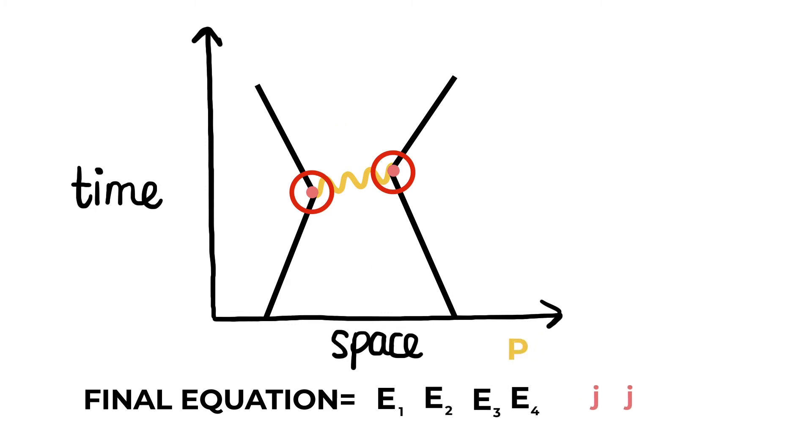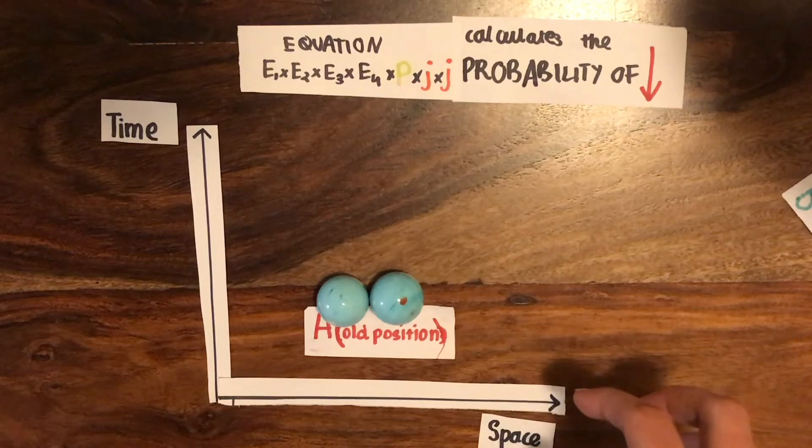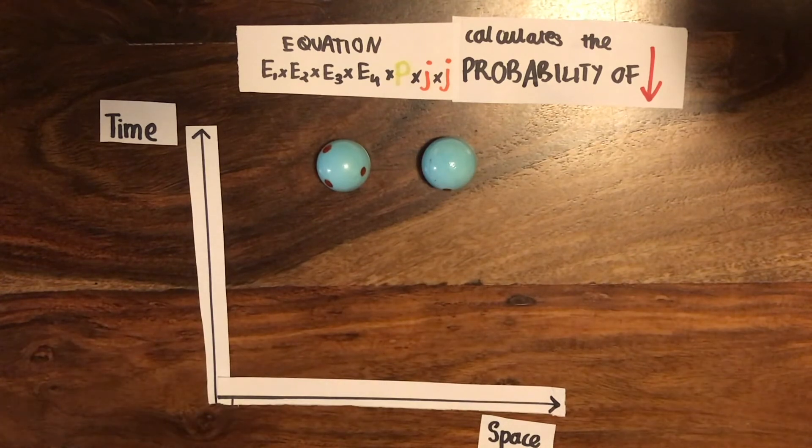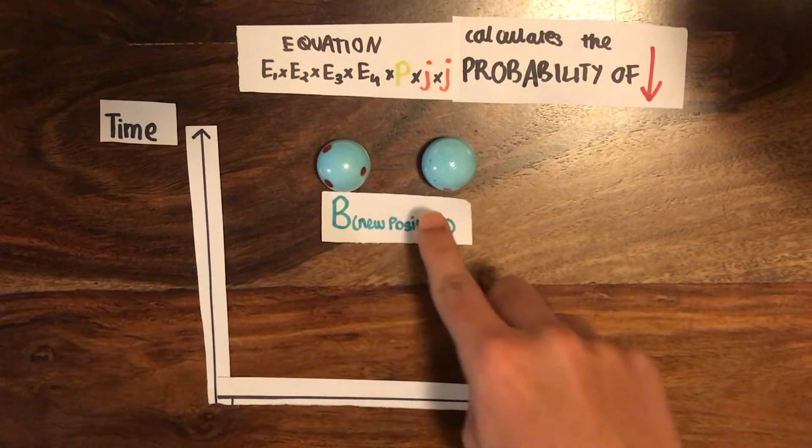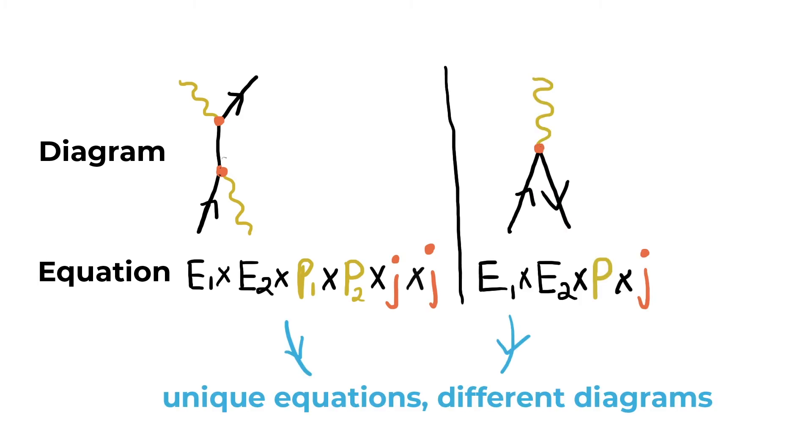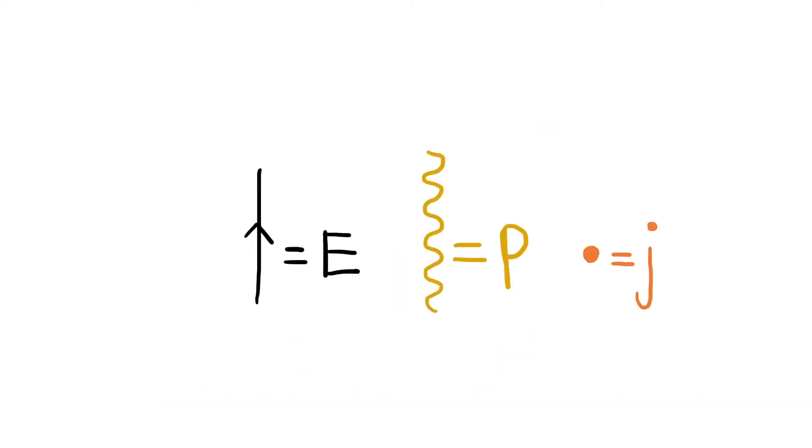Multiplying all of this gives you a main equation. And all this does is calculate the probability of particles moving to particular places in spacetime. So, each different Feynman diagram really depicts a unique equation built from the same building blocks.